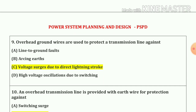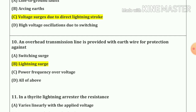Question number 9. Overhead ground wires are used to protect a transmission line against voltage surges due to direct lightning strokes. Our answer is option C. Question number 10. An overhead transmission line is provided with an earth wire for protection against lightning surges. Option B.